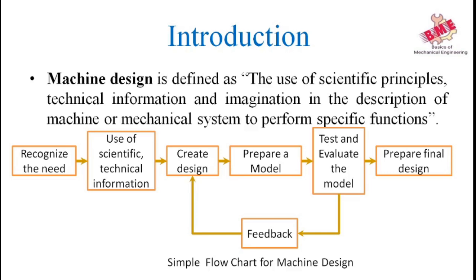After creating a design, we produce a prototype model. A prototype model means — for example, we have seen ship models in exhibitions, such as naval ship prototype models shown in Navy exhibitions. At the time of design also, firstly the prototype model is made and then testing is done on it using different types of software or tools. After testing, we get feedback and improve the design, creating a new prototype model with the improvements. After final testing, the product description and its detail drawing are given to the production department. This is the simple flowchart for machine design.